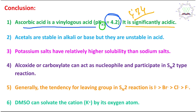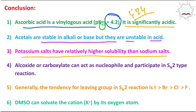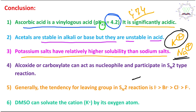Acetals are stable in alkali or base but unstable in acidic medium. Potassium salts have relatively higher solubility than sodium salts because K⁺ is bigger in size, so its charge density is less compared to Na⁺, which has a higher charge density. That is why K⁺ gets more solvated in the organic medium. DMSO (dimethyl sulfoxide) is a very polar, high-boiling solvent capable of dissolving inorganic salts. If such solvents are absent, you would need phase transfer catalyst (PTC).